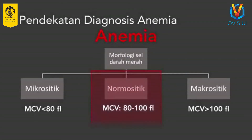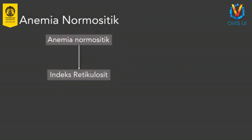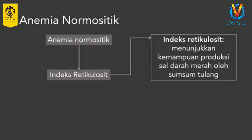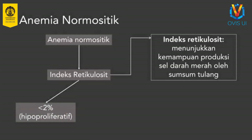Sekarang mari kita lihat pendekatan diagnosis untuk anemia normositik. Pada anemia normositik, pemeriksaan yang perlu dilakukan adalah pemeriksaan indeks retikulosit. Retikulosit adalah sel darah merah muda yang belum matur. Seharusnya hanya sedikit retikulosit yang ditemukan di sirkulasi karena pada kondisi normal sel darah merah matur yang dilepaskan ke dalam sirkulasi. Pada kondisi anemia atau ketika jumlah sel darah merah rendah, tubuh seharusnya berupaya untuk menjaga keseimbangan dengan meningkatkan produksi sel darah merah dalam waktu yang lebih cepat. Akibatnya lebih banyak retikulosit yang masuk dalam sirkulasi. Dengan demikian indeks retikulosit menggambarkan kemampuan produksi sel darah merah oleh sumsum tulang.